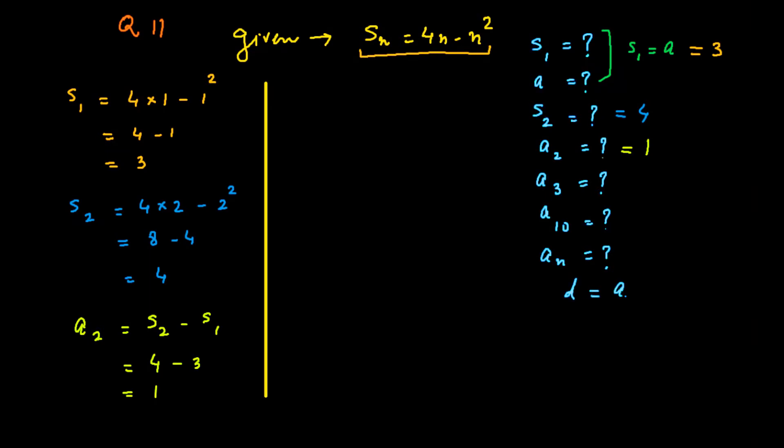Now to find d, a2 minus a1, that is 1 minus 3, equals negative 2.